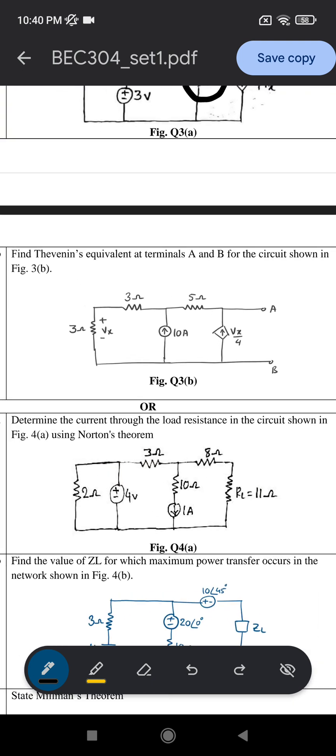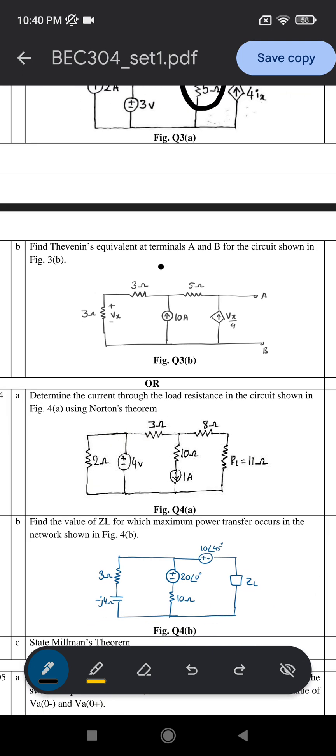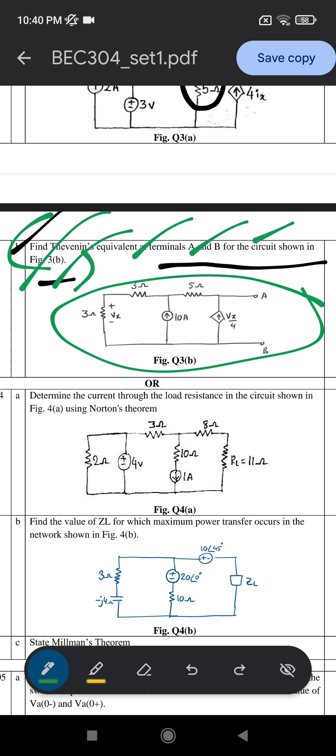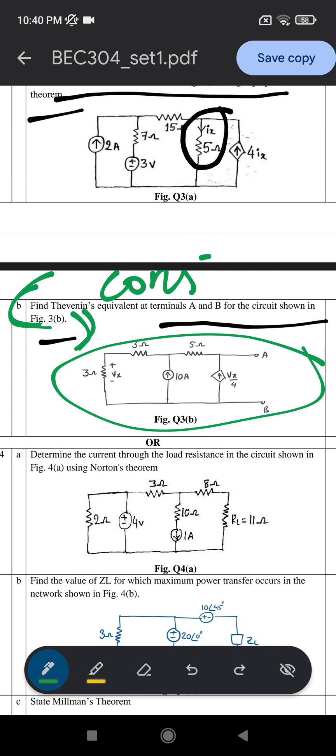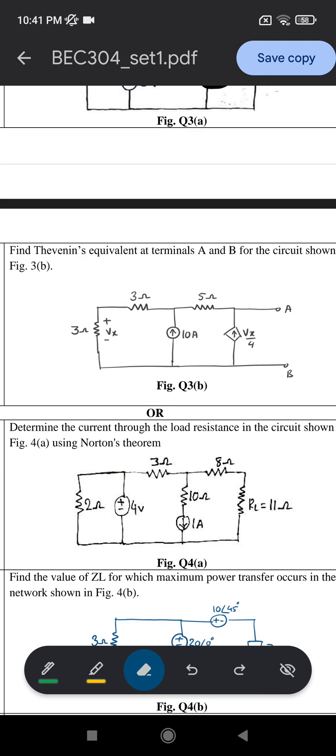The next question is: find the Thevenin's equivalent at terminals A and B for the circuit shown in the figure. This headline is constant for you all, but this diagram is not constant - you need to work on different diagrams that I've showed you in the question paper.